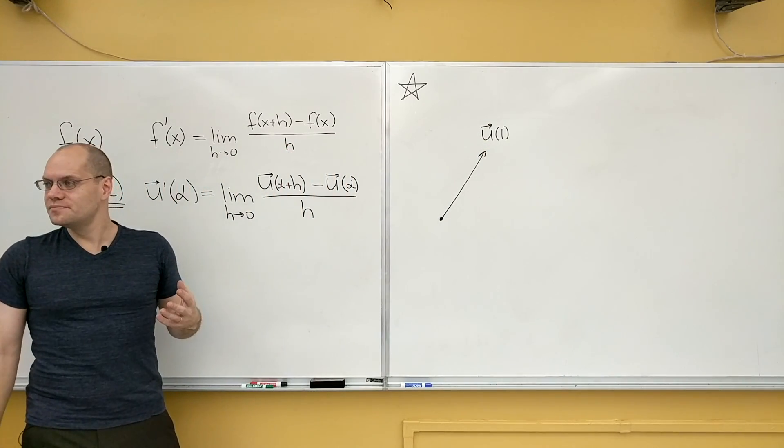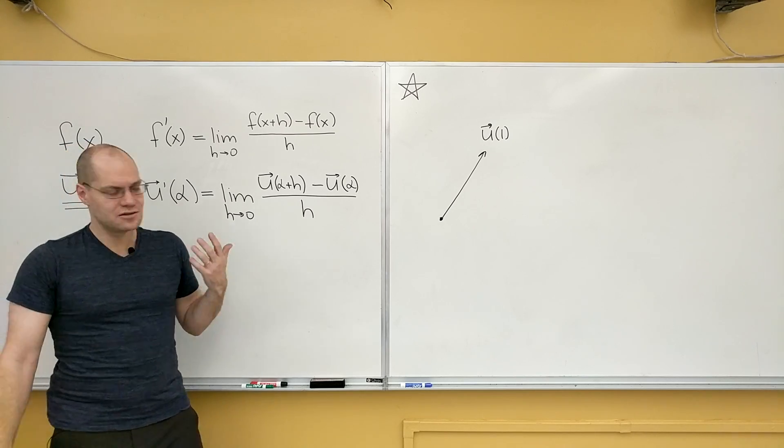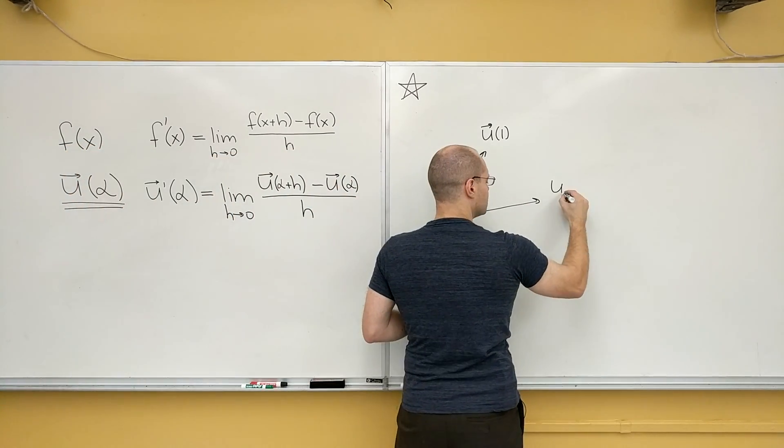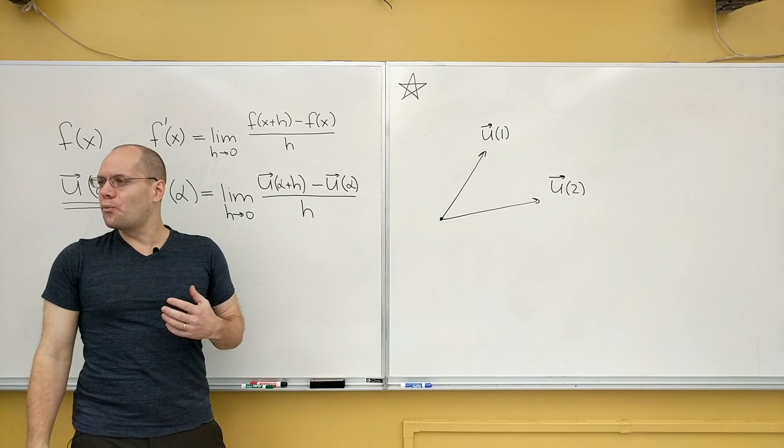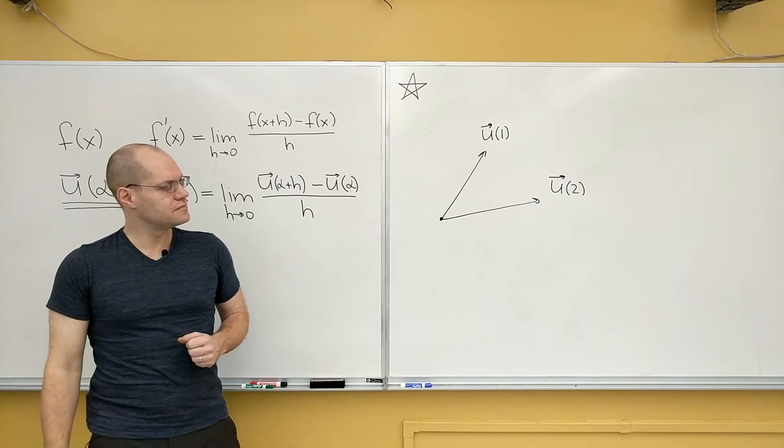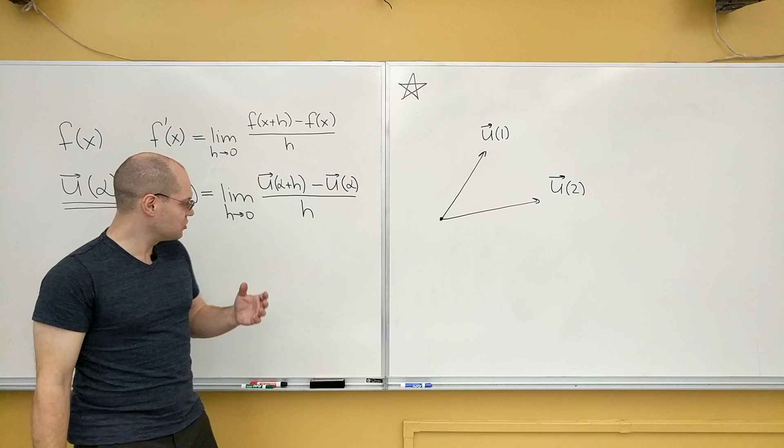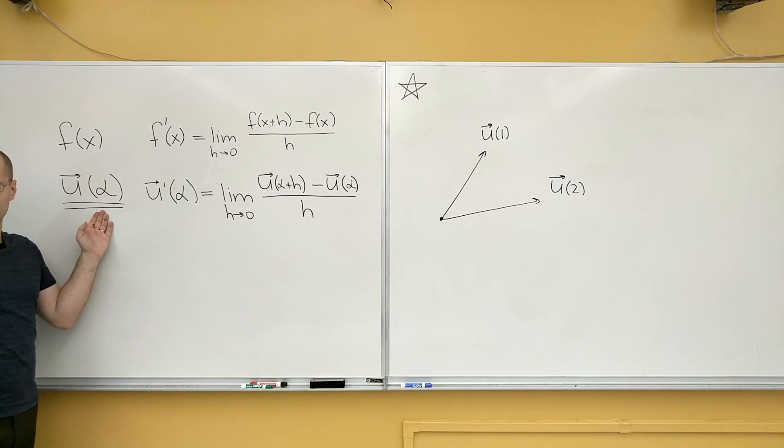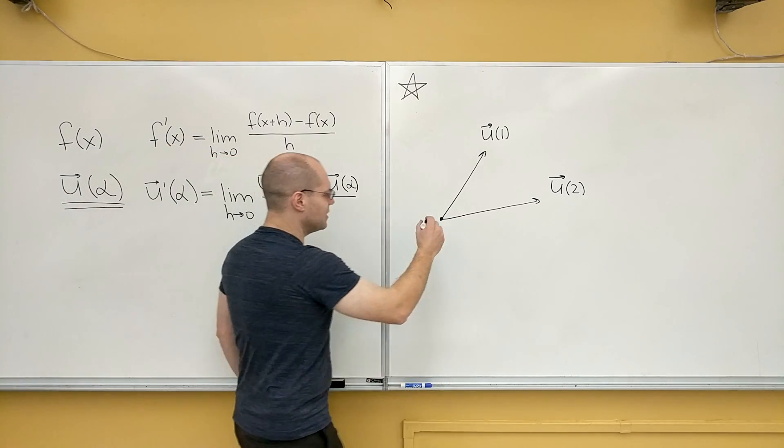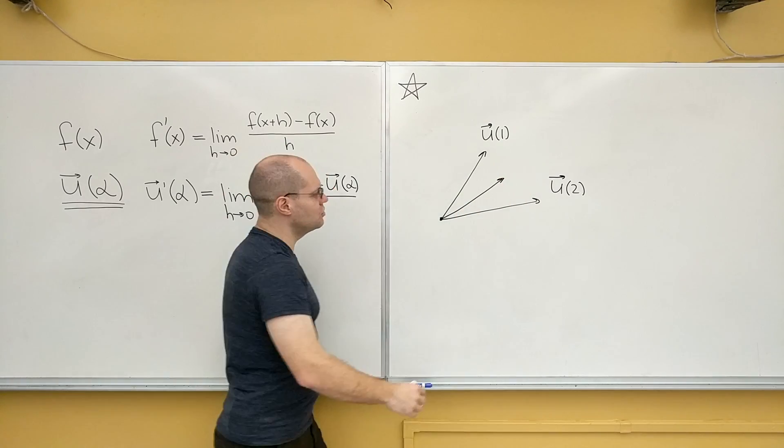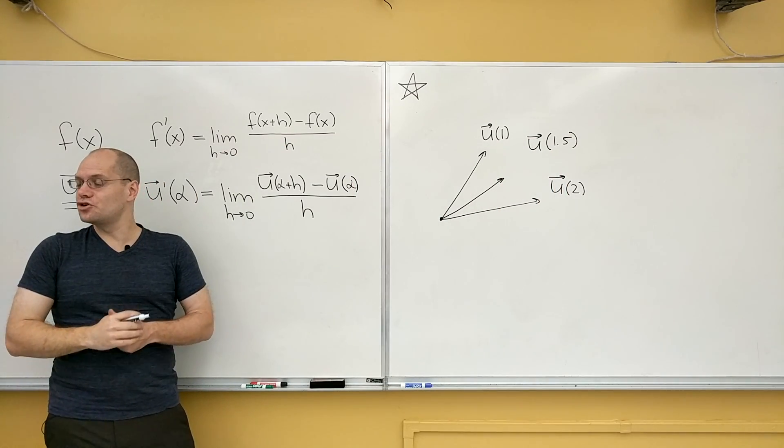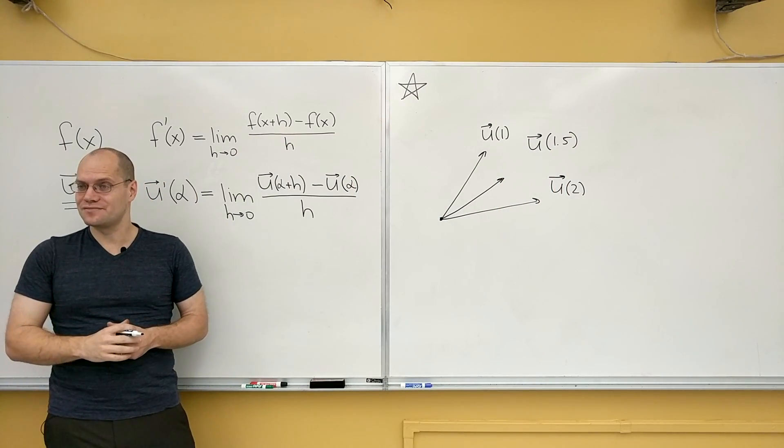U of two is also some vector. Let's draw it. U of 1.5 is also some vector. If it's a reasonable vector function, then that vector would be somewhere here.